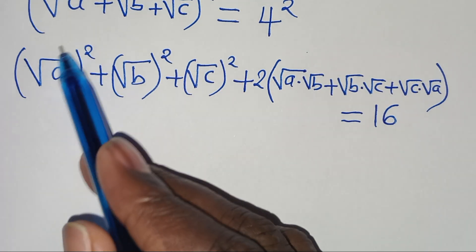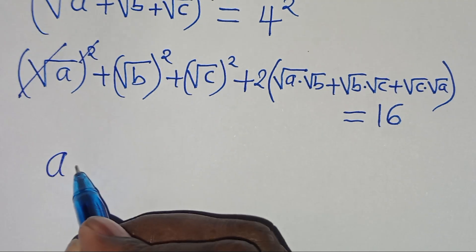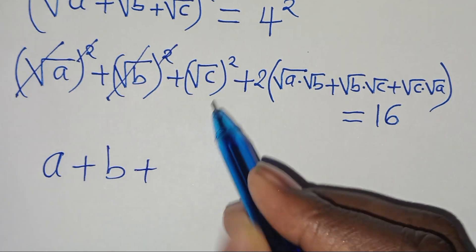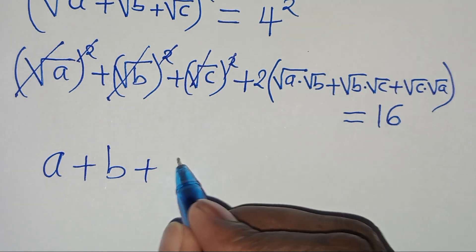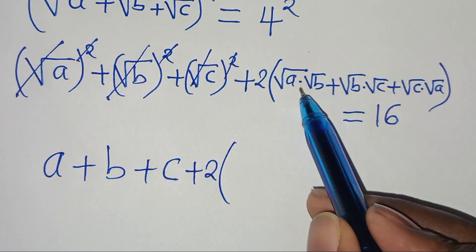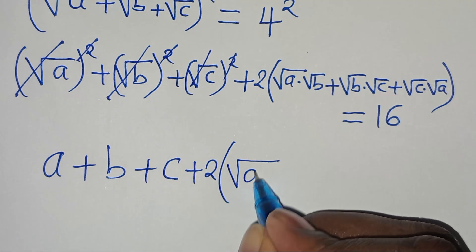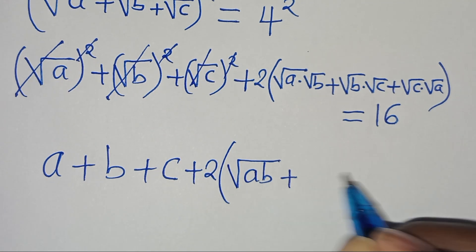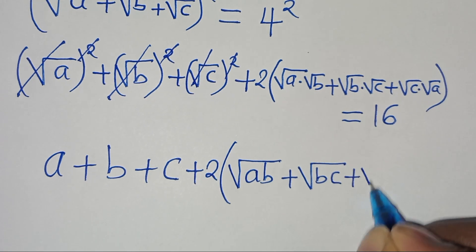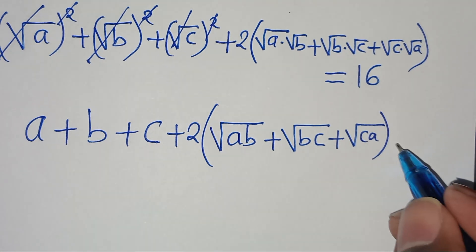Simplifying by removing the square root signs: a + b + c + 2(√(ab) + √(bc) + √(ca)) = 16.